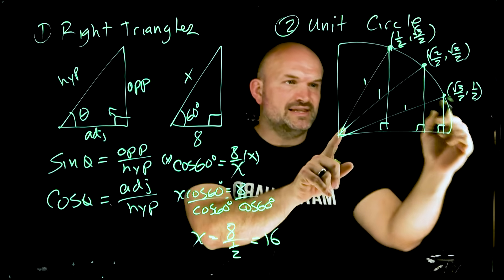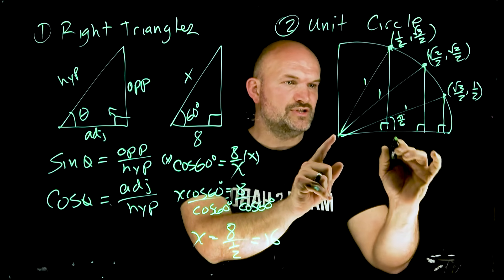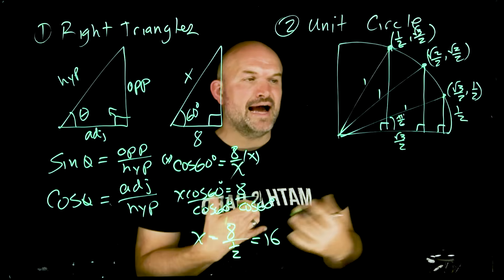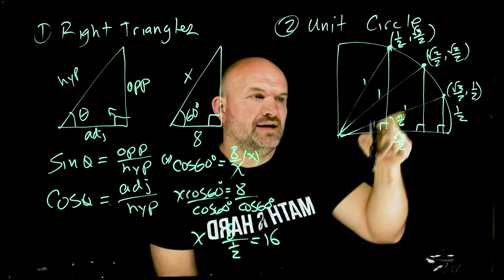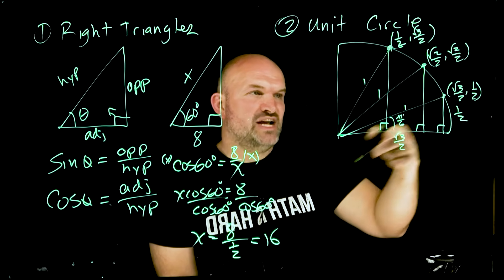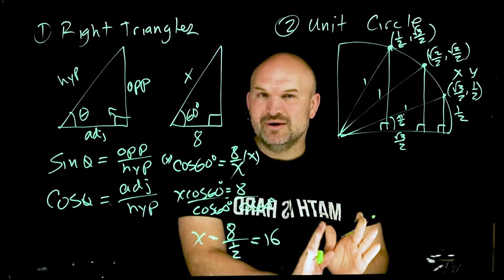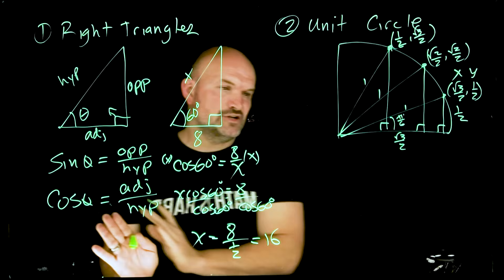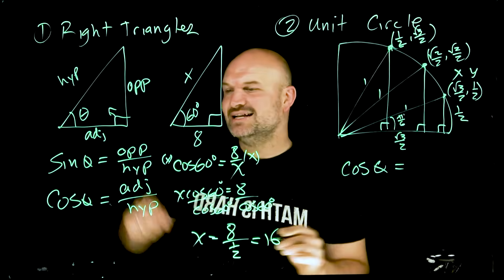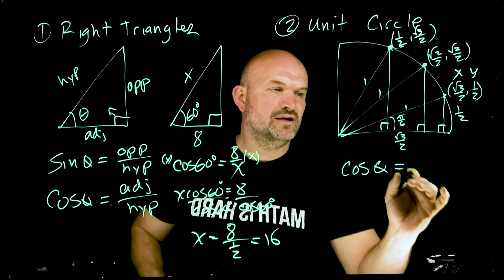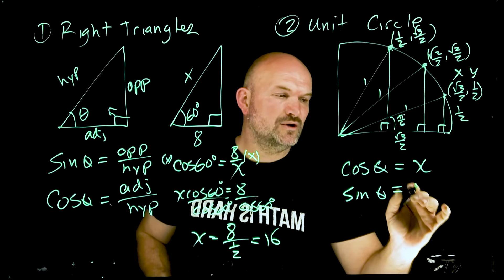Look at the angle pi over 6. The right triangle has an x-coordinate of square root of 3 over 2 and a y-coordinate of 1 half. The cosine of pi over 6 is adjacent over hypotenuse; since the hypotenuse is 1, it's just the adjacent side — the x-coordinate. The opposite side corresponds to the y-coordinate. So on the unit circle: cosine of theta represents the x-coordinate, and sine of theta represents the y-coordinate.